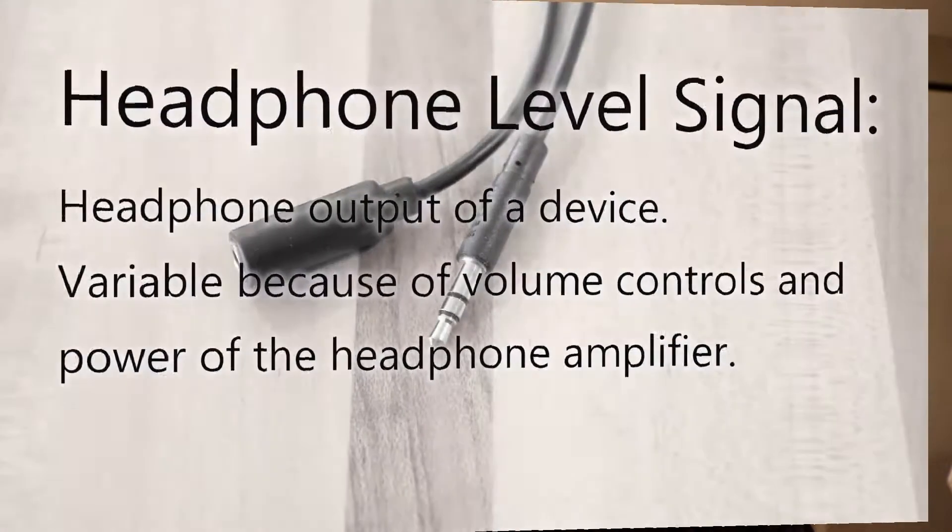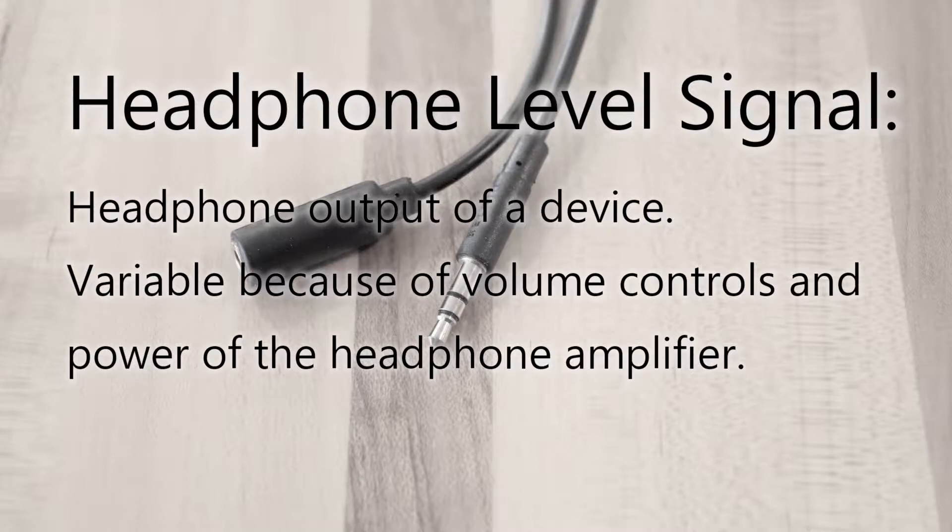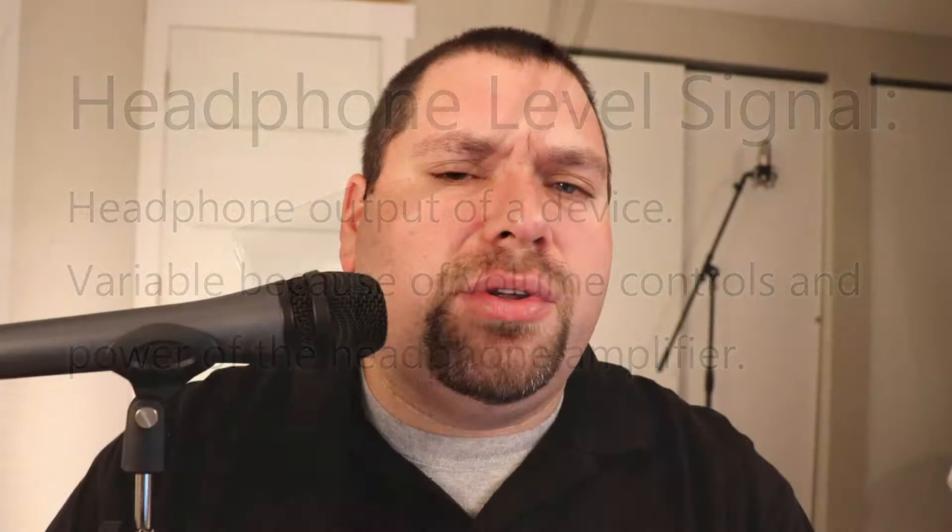Headphone level — a couple of years ago you might have been laughed at for bringing this up, but it's a reality in today's world. More and more people are taking the headphone output of their device and plugging it into an audio mixer. Headphone level is all over the place because it's variable — you can turn the volume up and down. Generally, most headphone level is just a little weaker than line level, but some devices have a strong enough headphone amplifier that it can actually be louder than line level, depending on the device.